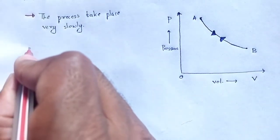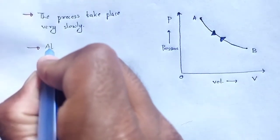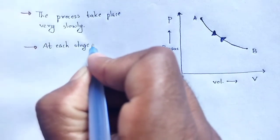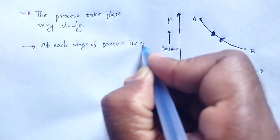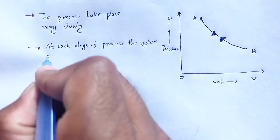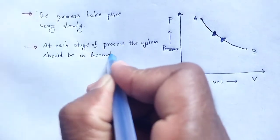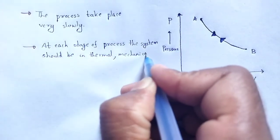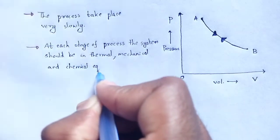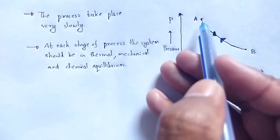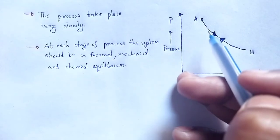Second observation: at each stage of the process, the system should be in thermal, mechanical, and chemical equilibrium throughout the reversible process.